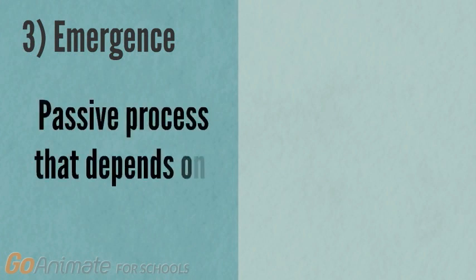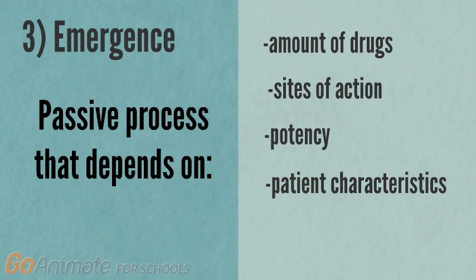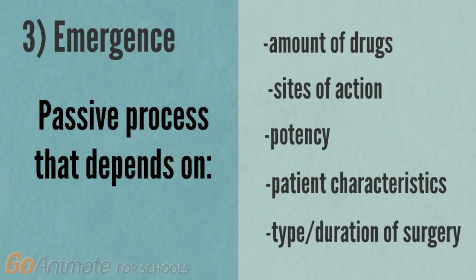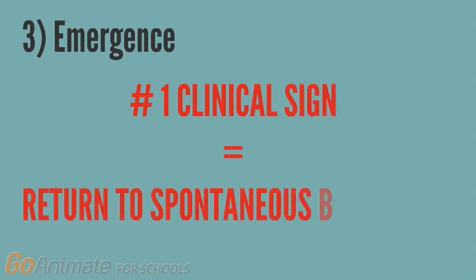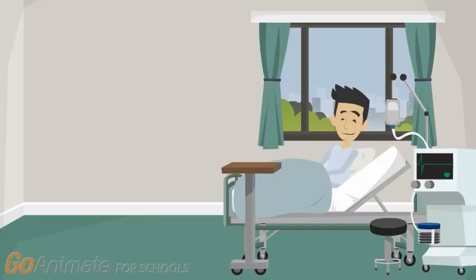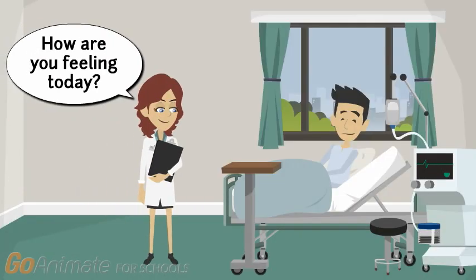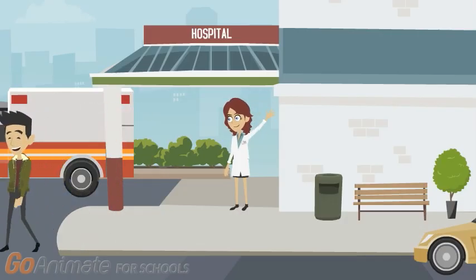Finally, the patient will enter the emergence stage. This is a passive process that depends on the amount of drug administered, their site of action, potency and pharmacokinetics, the patient's physiological characteristics, and the type and duration of the surgery. The number one sign to look for in this stage is a return to spontaneous respiration, signaling proper emergence from the anesthetic. At this point, the patient will regain consciousness and breathe on their own. Some additional monitoring is required before the patient is allowed to leave the hospital.